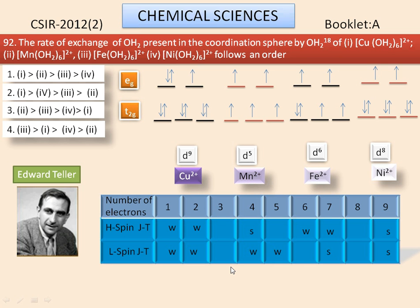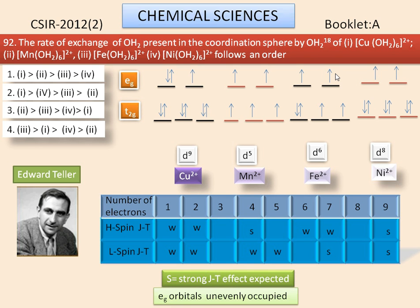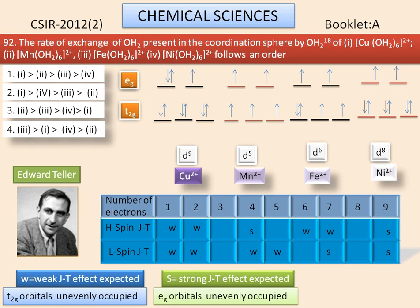For Fe2+ complexes, the EG orbital is evenly occupied, but T2G orbital is unevenly occupied. Because of this, it will experience weak Jahn-Teller effect. That is, equatorial bonds will be elongated. So the rate of exchange of ligand will be easy, but its rate will be slower than copper 2+ complex, because Fe2+ will experience only weak Jahn-Teller effect. But in the case of copper 2+ complex, it has strong Jahn-Teller effect.